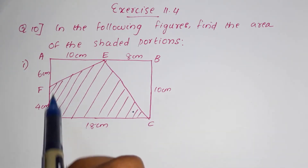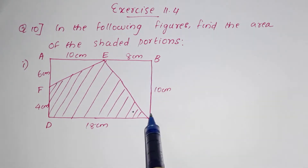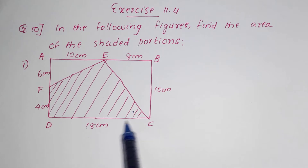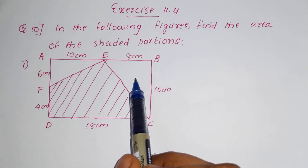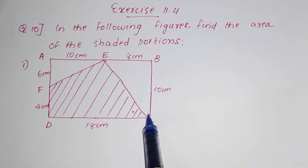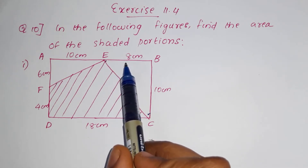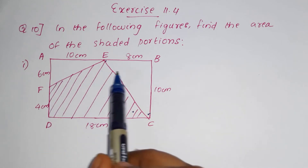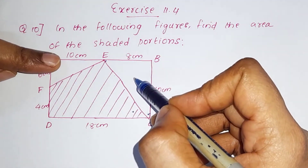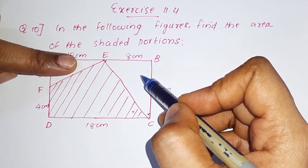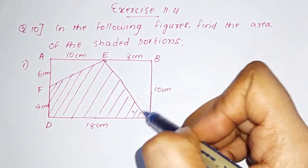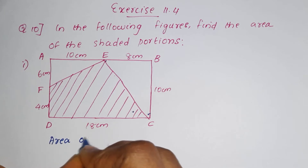Inside the rectangle, there are two right-angled triangles. We are going to find out the area using the equation for triangle area, which is half BH. First step: find the area of the rectangle ABCD, then find the area of the two triangles.